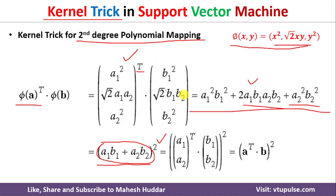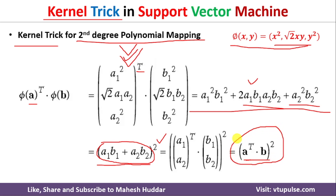This is nothing but the transformed point computed via the mapping function. Using second-degree polynomial mapping, each data point would normally need to be converted into mapping values. But with the kernel trick, rather than doing this for every data point, we simply take the dot product of a data point with a second data point — we are not actually converting them. This saves a lot of computational cost and learning time. Without the kernel trick, each data point would need to be converted into 3D space before applying the classification algorithm.